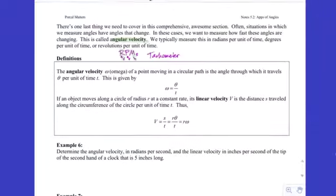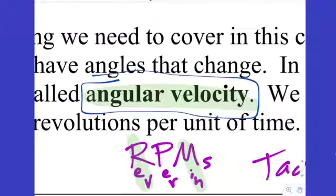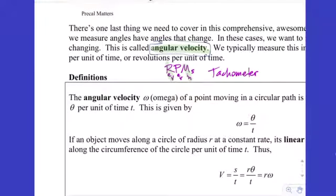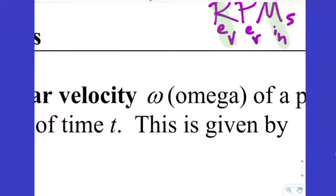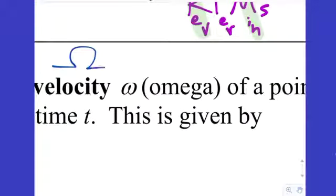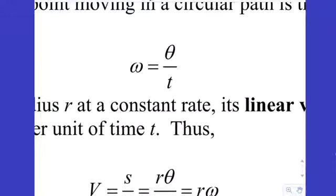Let's review the box we did on Friday. We're talking about angular velocity — when something spins, we're interested in how fast it spins. We measure angular velocity in units of rotation: rotations, revolutions, degrees, or radians per unit of time. We use the symbol omega — the lowercase Greek letter — and define it as theta divided by time, where theta is any measure of rotation.